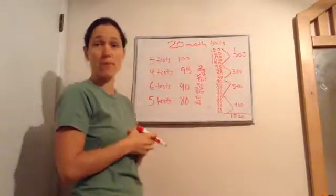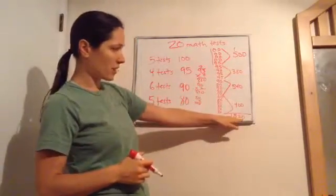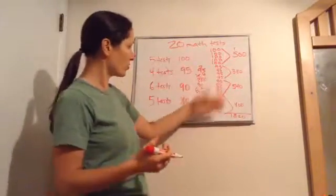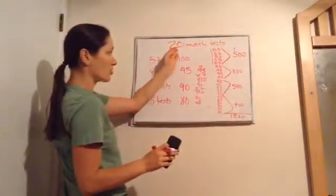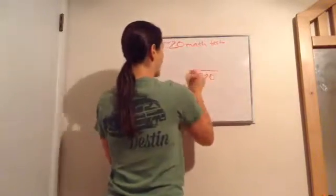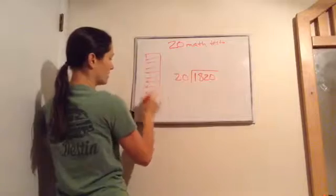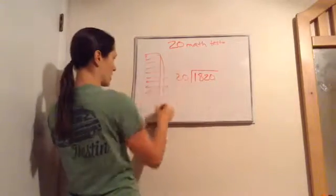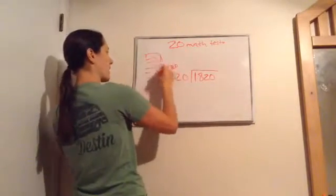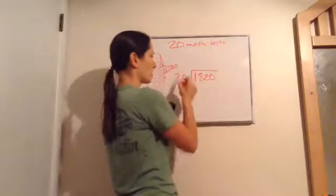This is actually how a teacher finds your grade for your report card — she takes all your scores, adds them up, and figures out how many tests you took. You took 20 of them. So we take the total, 1820, and divide it by 20 to see what the average score per test is. 20 won't go into 18, so we look at 182.